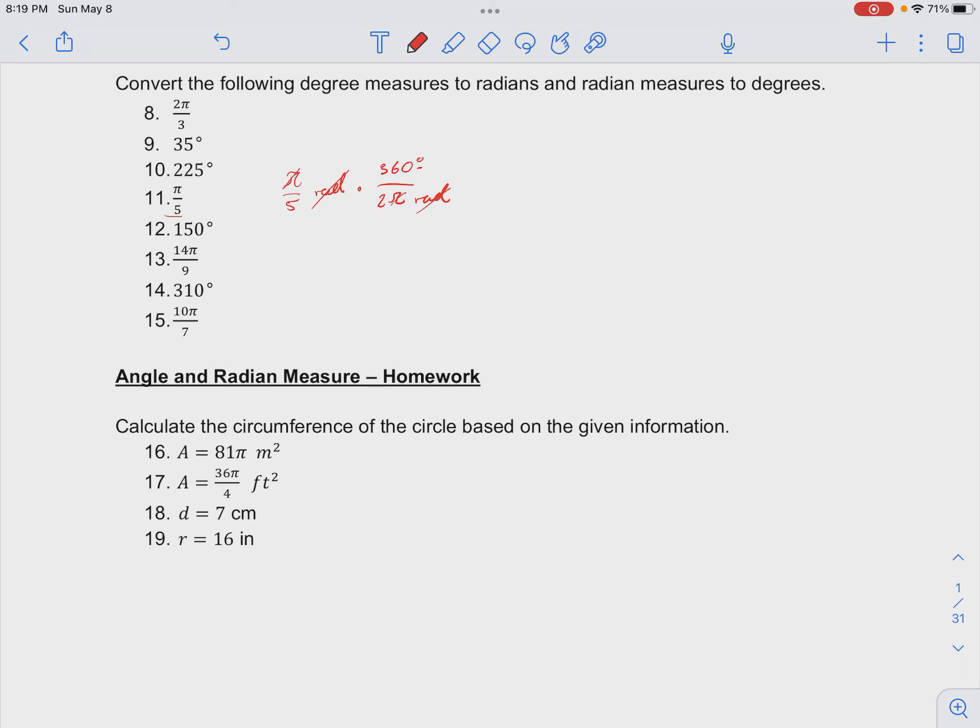And we also have a π and a π they cancel out. So this becomes 360 divided by 5 times 2, which is 10. So that's 360 divided by 10, which is 36 degrees.